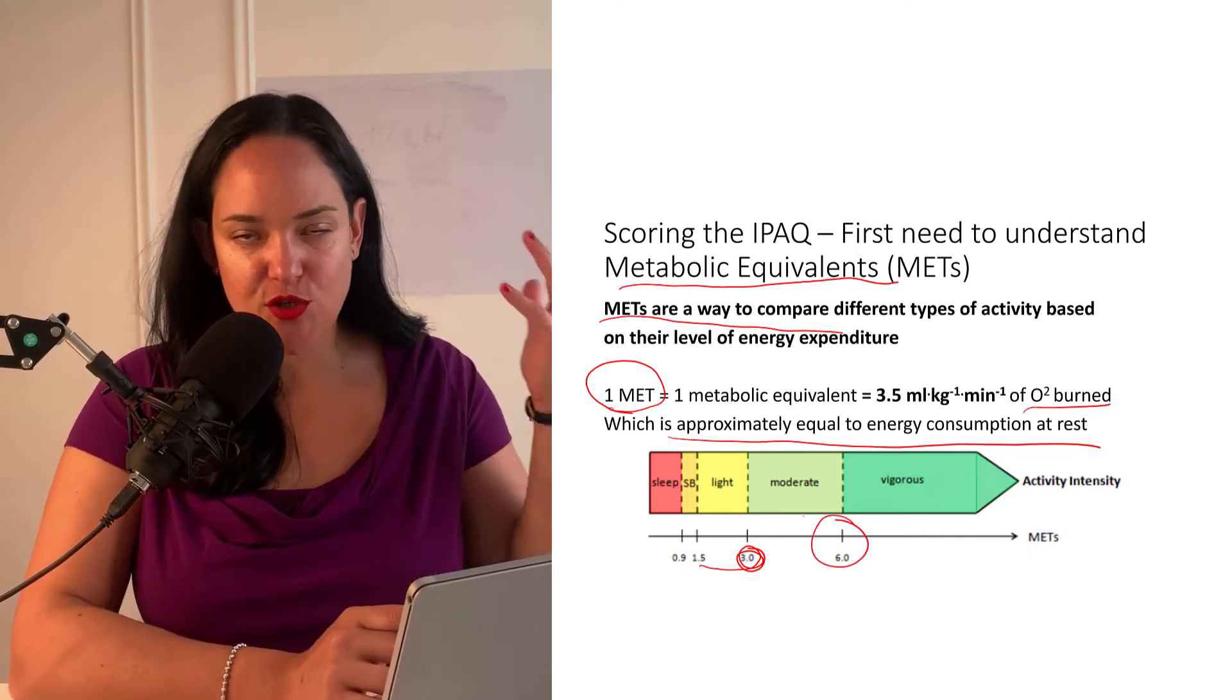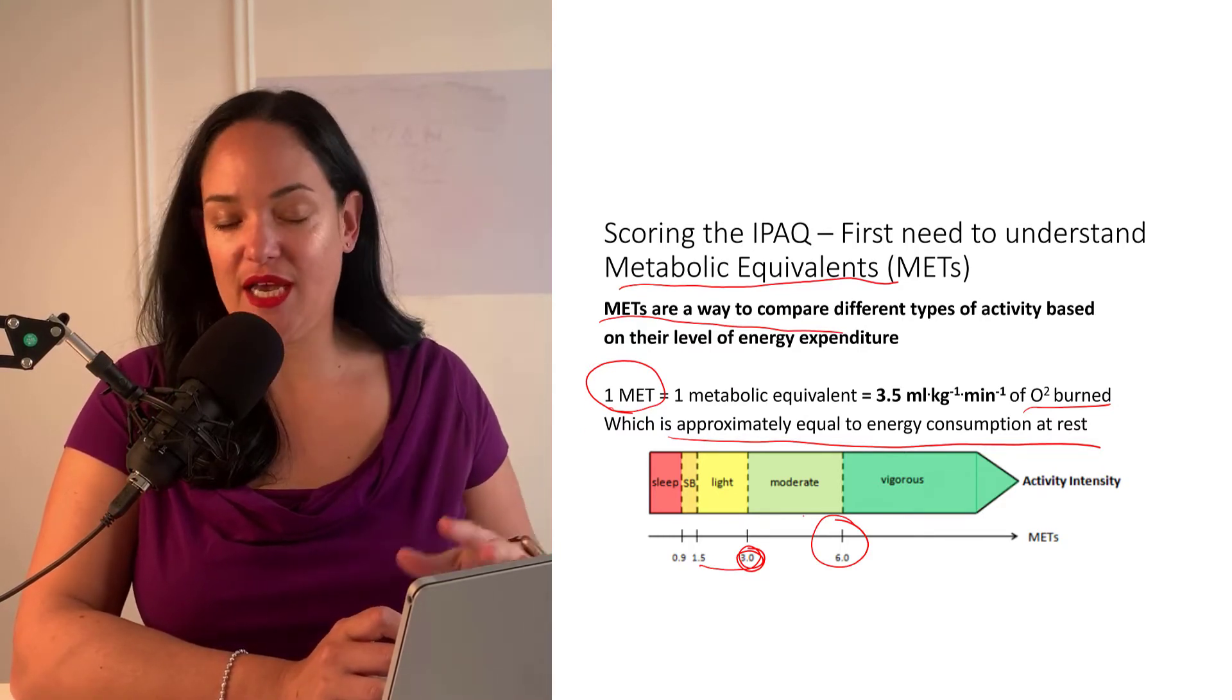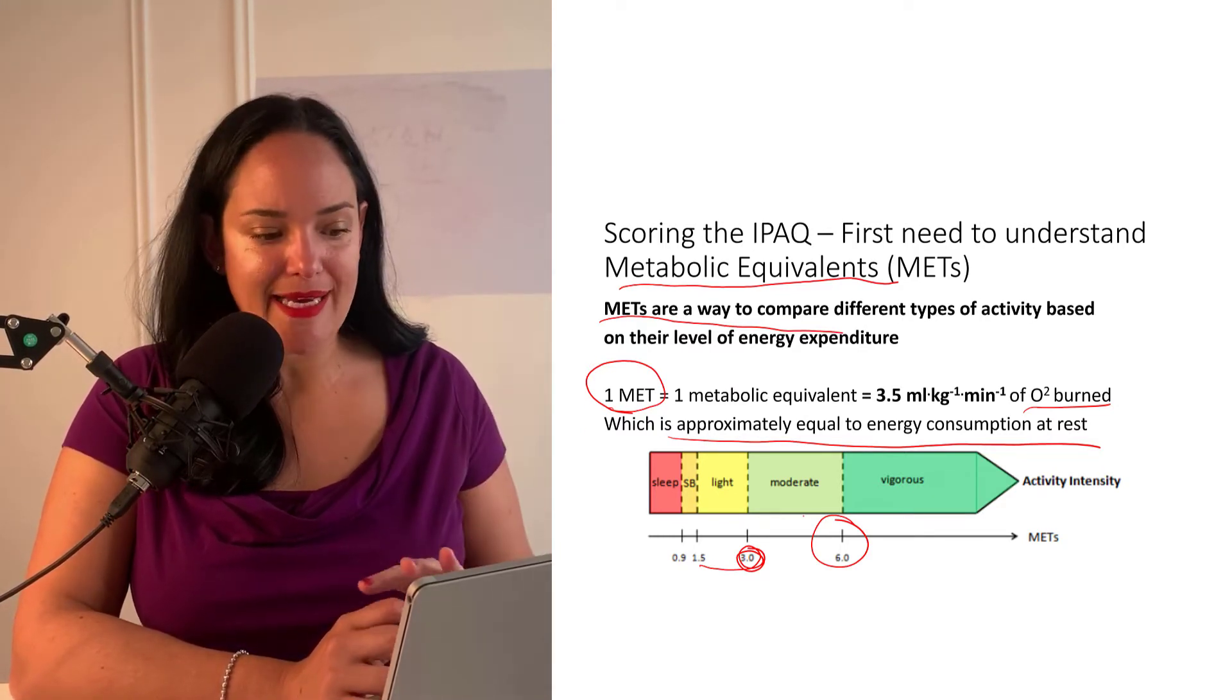So vigorous intensity activities are around the six METs or more. There are some that are really high and even in the kind of eight, nine range as well.